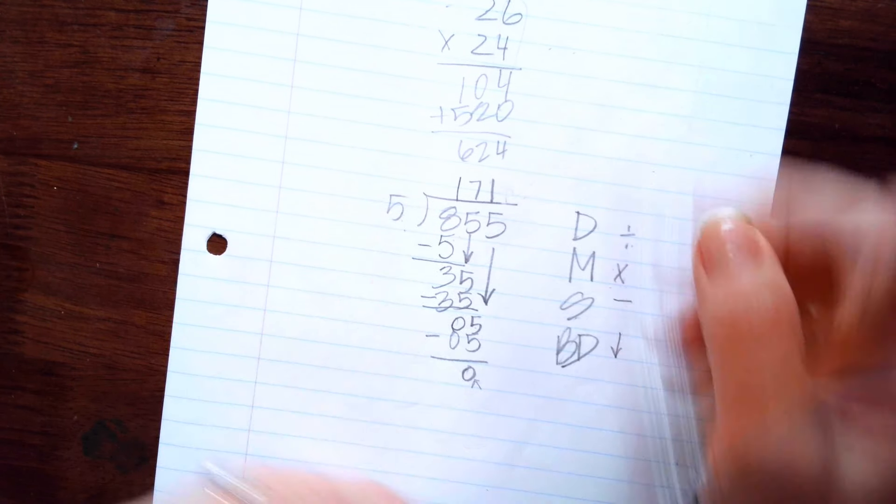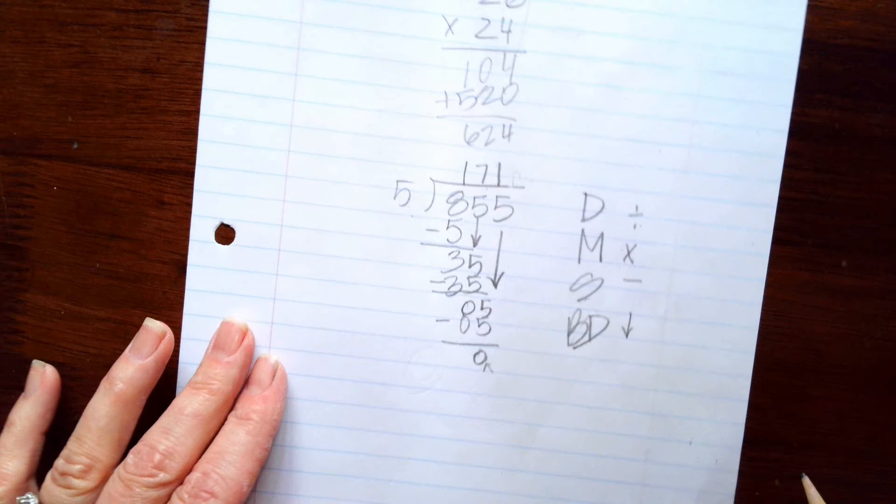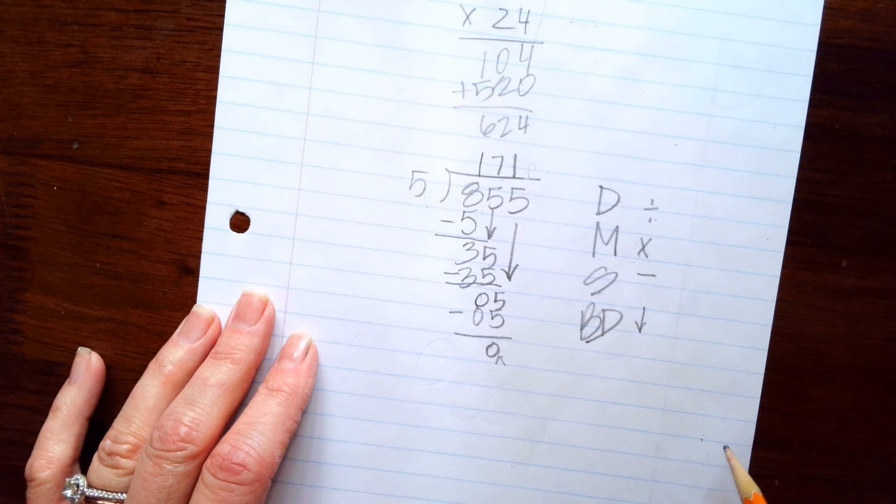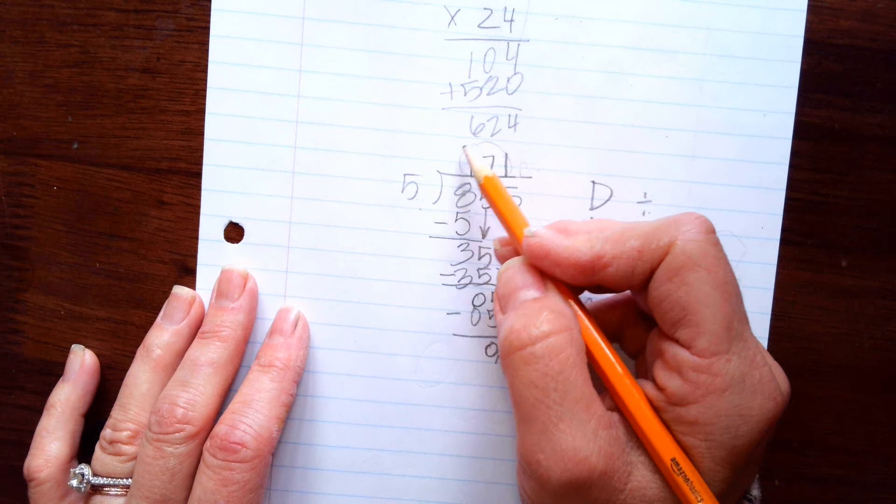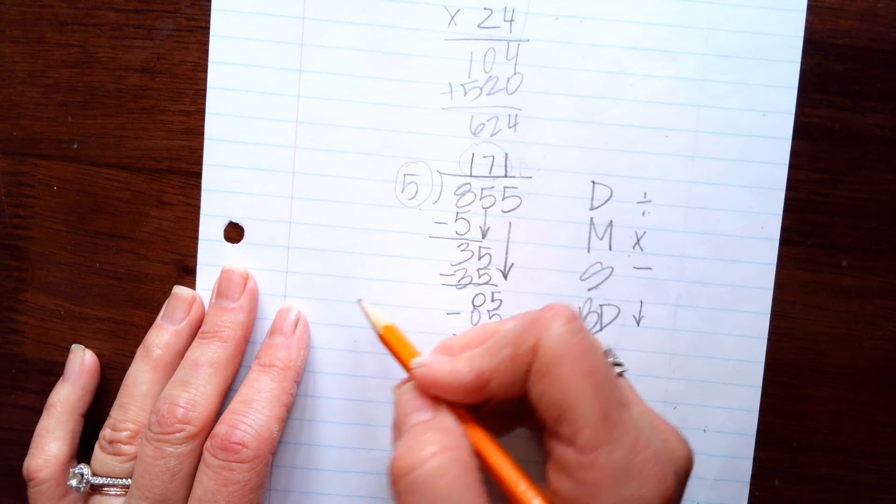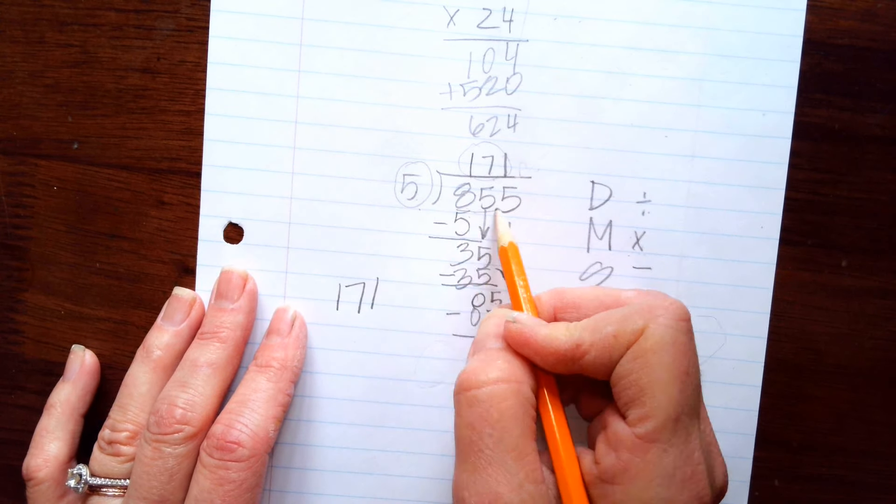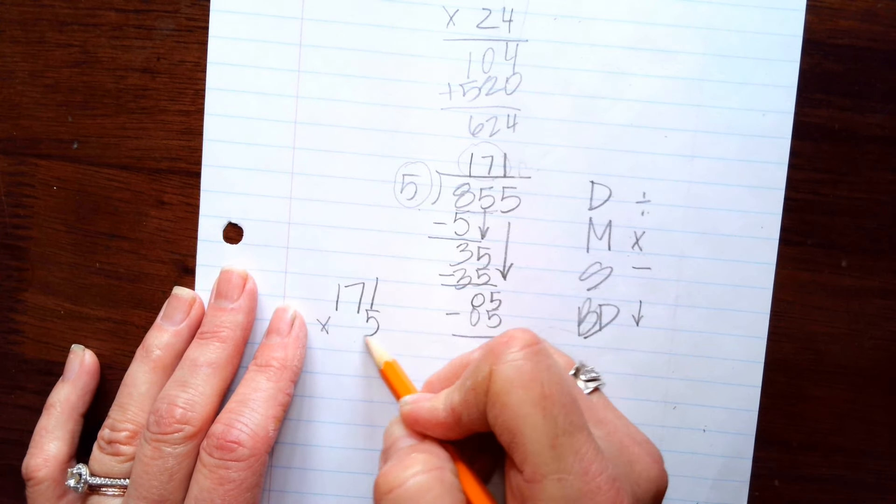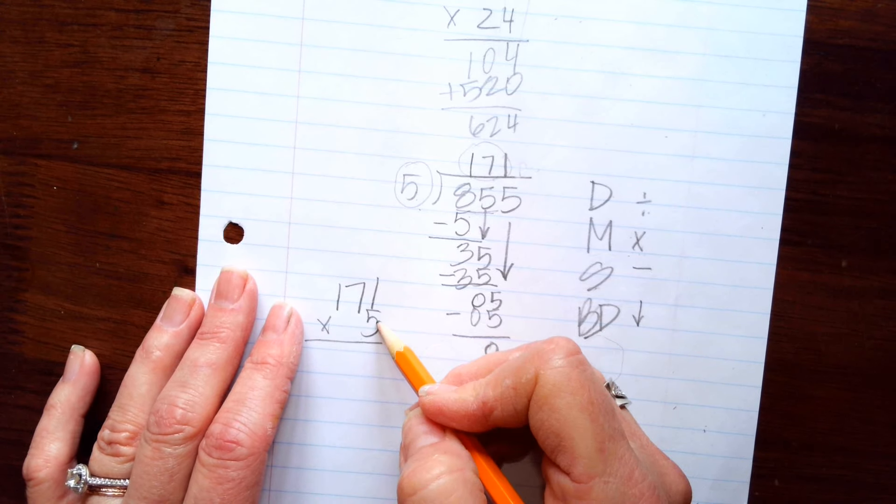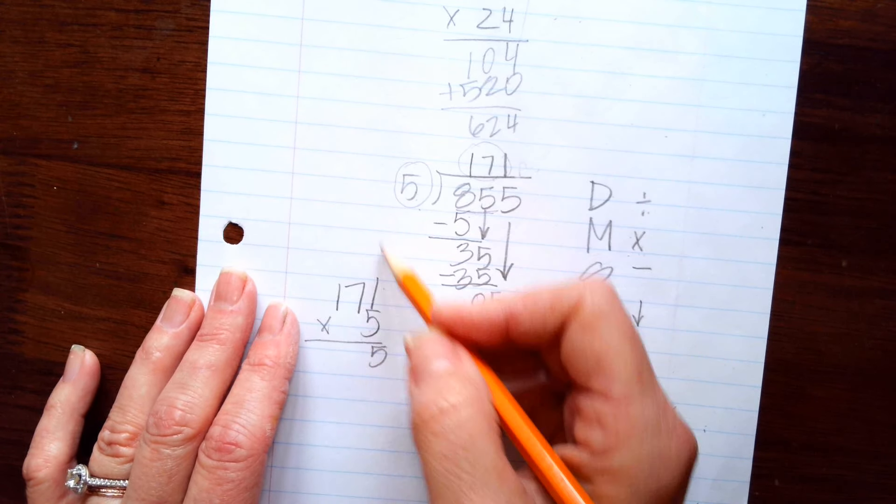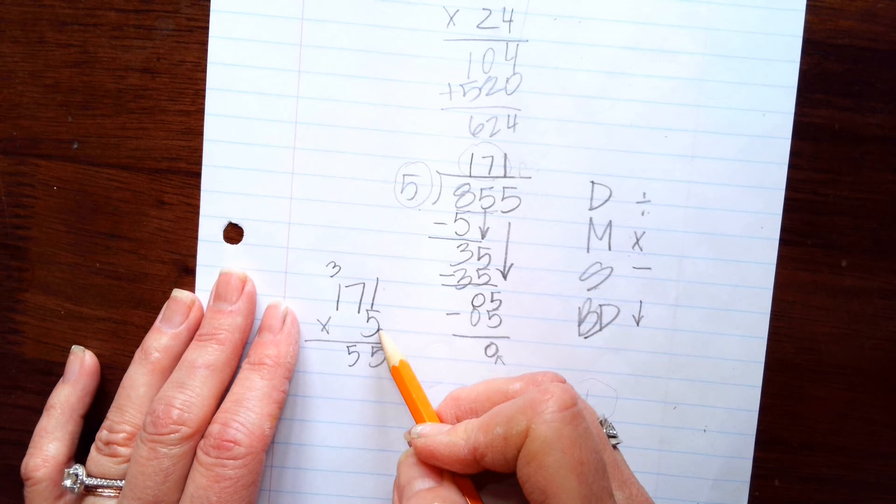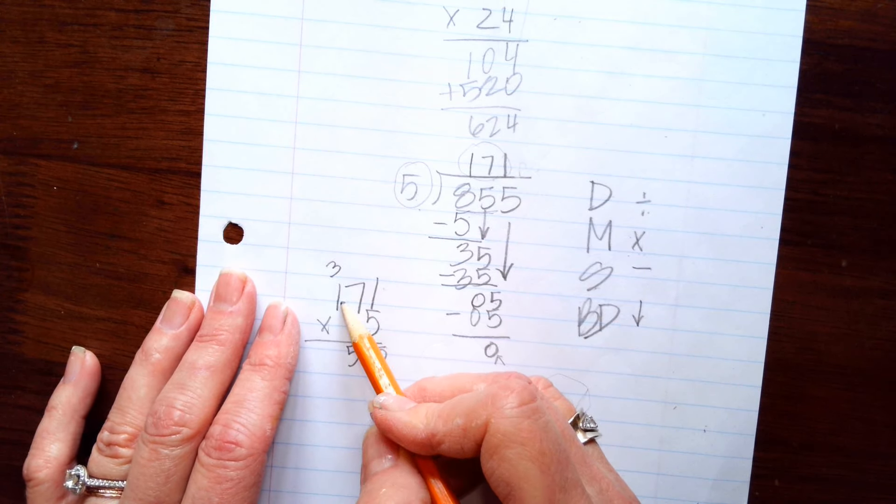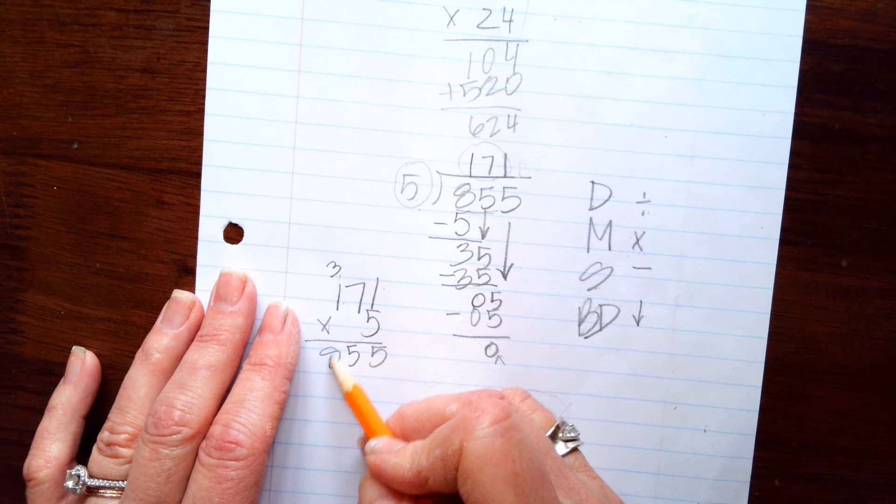So the answer is one hundred seventy-one. Now to check to see if you've got your answer right, you take this number and you multiply it times this number. And you have to get this number right here. So we're going to do five times one is five. Seven times five is thirty-five. You put the three here. You put the five here. Five times one is five. Five plus three is eight.